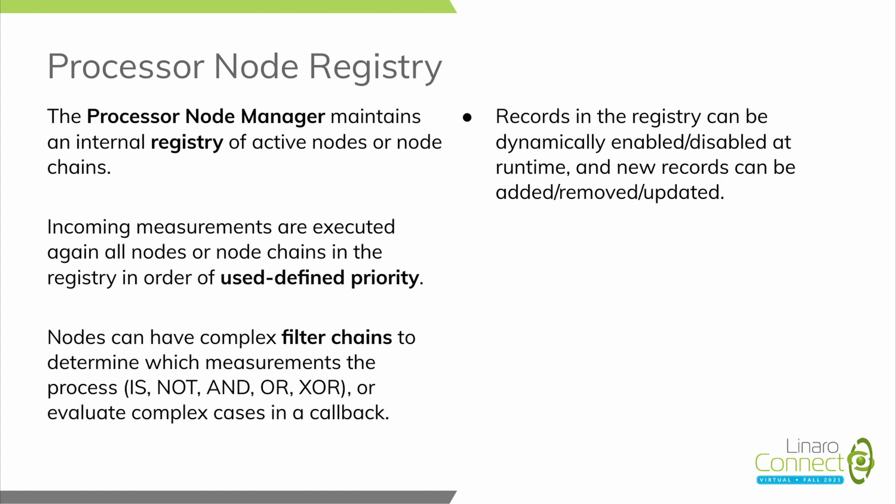The important thing to understand about the processor node registry is that incoming measurements are executed against nodes and node chains in a user-defined priority. Because operating on measurements is a destructive operation, there is a mechanism to indicate in which order individual nodes or node chains should be evaluated inside the registry. You can enable and disable individual nodes or node chains in the registry at any time, or add and remove them.